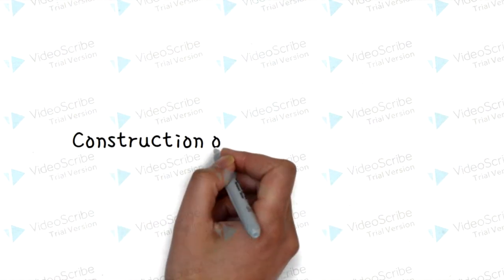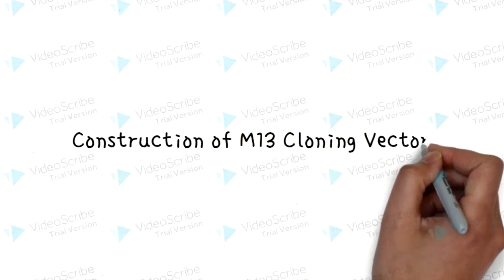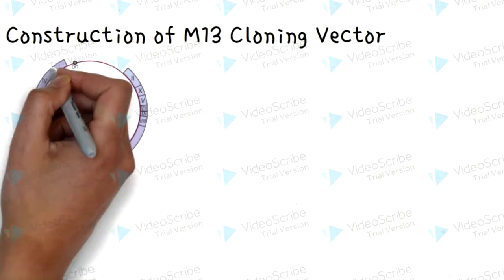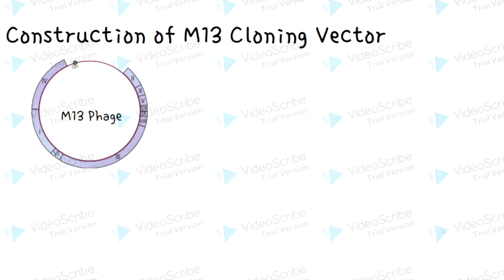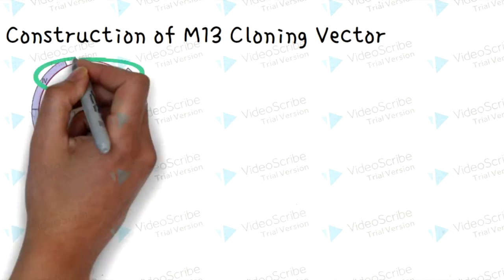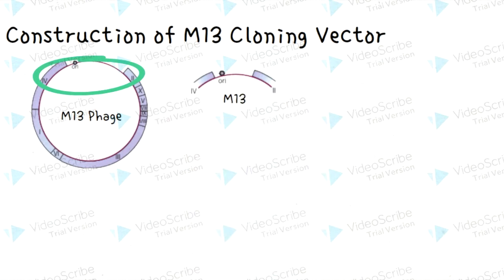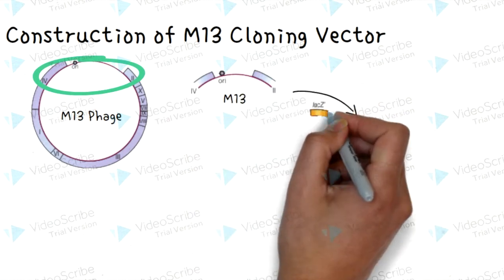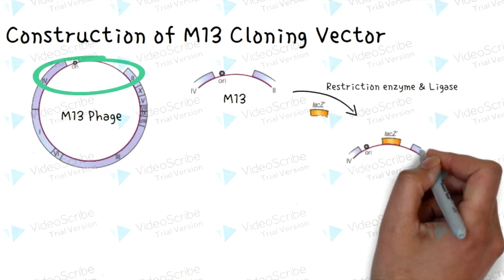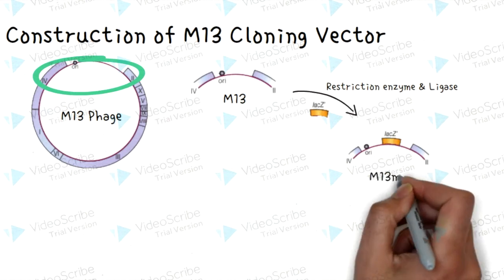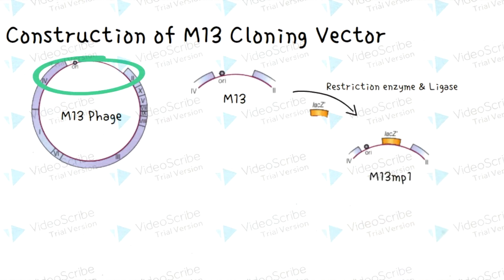Let's briefly talk about the construction of the M13 cloning vector. The M13 phage contains 10 closely packed genes. In order to construct the vector, the first step is to introduce the lacZ gene into the intergenic sequence using restriction enzyme and ligase. This gives rise to M13 MP1. However, the problem is that M13 MP1 does not have any unique restriction sites in the lacZ gene.